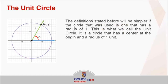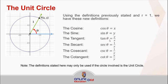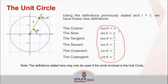The definitions we have stated would be much simpler if we designate the circle to have a radius of 1, and this kind of circle is what we call the unit circle. It is a circle that has a center at the origin and a radius of 1 unit — that's the reason why it's called the unit circle. Since our r is equal to 1, we now have these new definitions for our six trigonometric functions. Take note, these six definitions can only be used if the circle we're talking about is the unit circle.